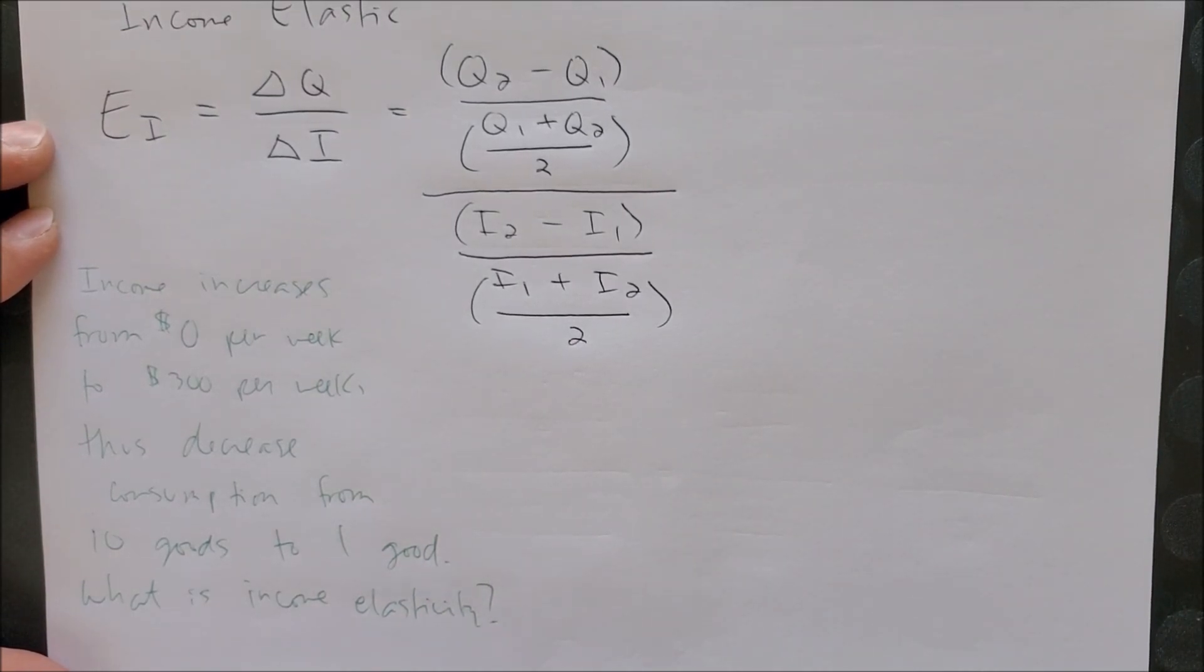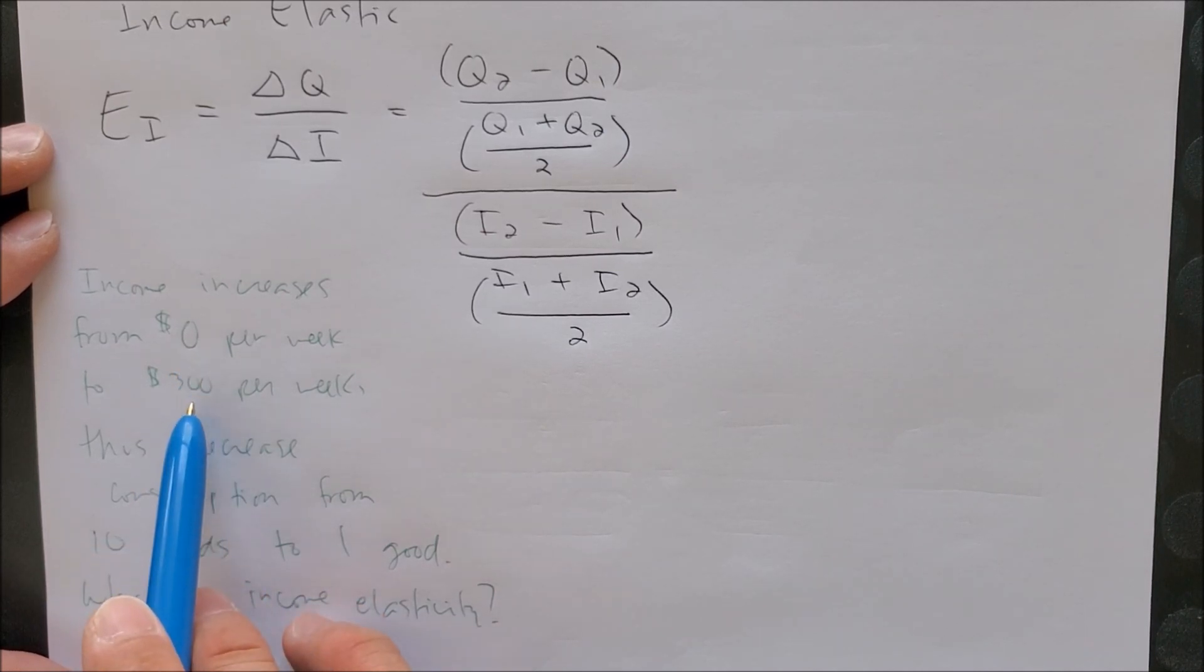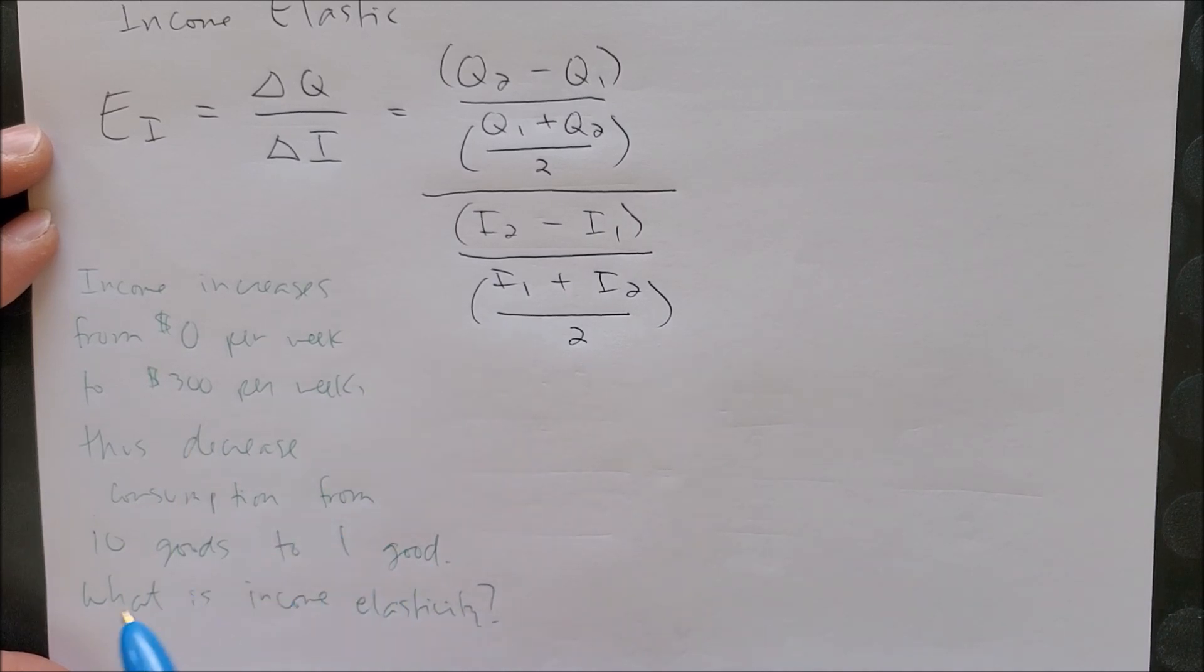Notice now that we have zero dollars and now we are earning money to 300 per week. This is going to happen - you yourself can start off with no money and now perhaps you have a gig mowing lawns, for example, and now you're earning money. So you are starting from zero to now three hundred dollars per week.